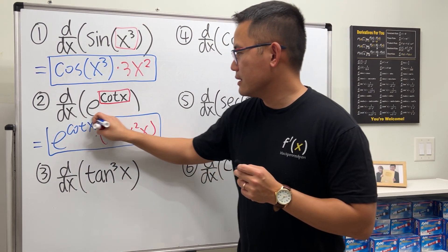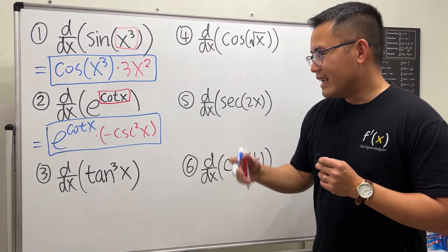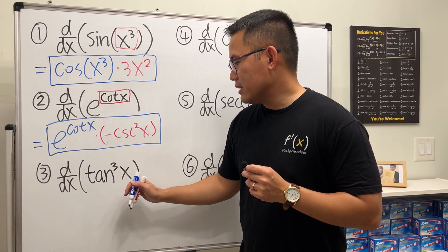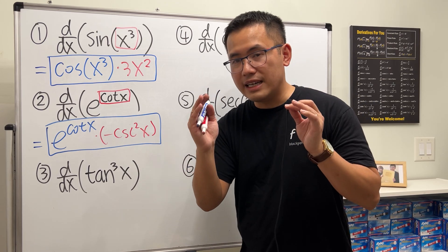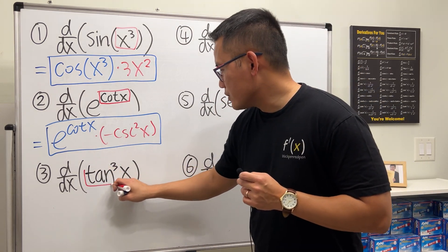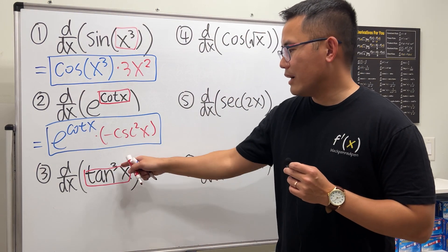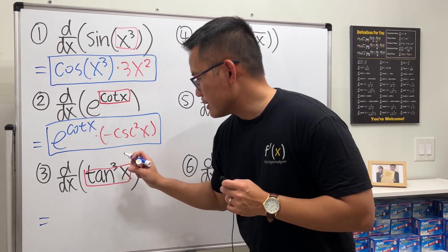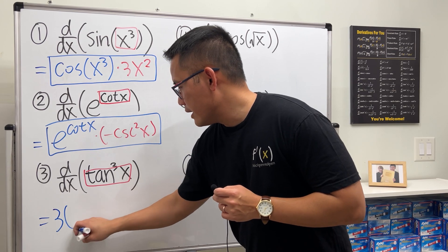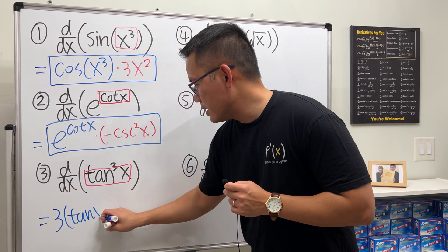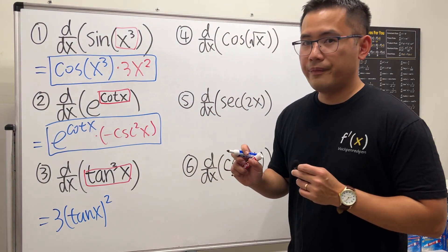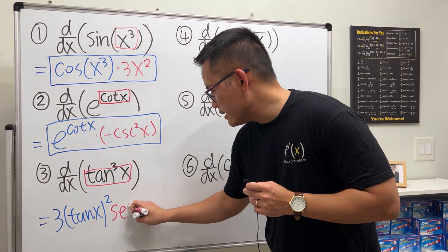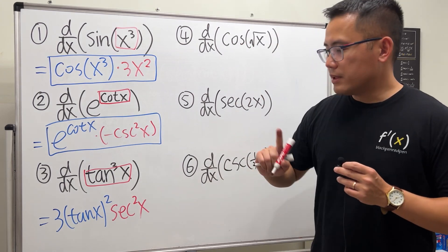Next we have tangent to the third power of x, which really means tangent x is inside to the third power. The inner function is tangent and we have the third power, so bring the 3 to the front: 3 times tangent squared x, then multiply by the derivative of tangent, which is secant squared x. Remember, secant and tangent are best friends in calculus.